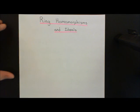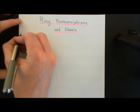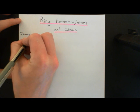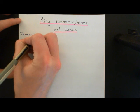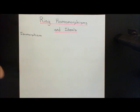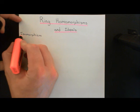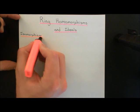Before we begin with the concept of a ring homomorphism, I firstly want to talk about the concept of a ring isomorphism, which is a slightly more intuitive concept than a homomorphism. If you've studied other parts of abstract algebra — group theory, linear algebra, field theory — the concept of a ring isomorphism is exactly the same as it was in group theory, vector spaces, or field theory.